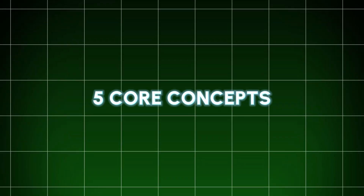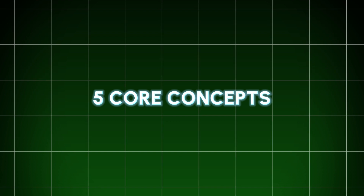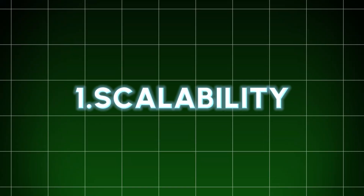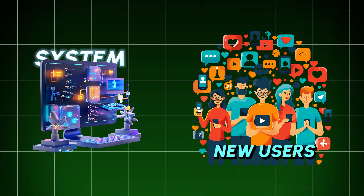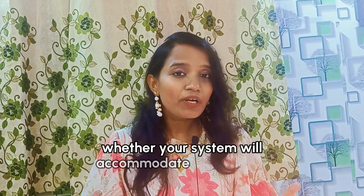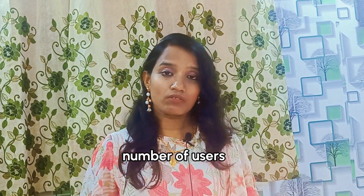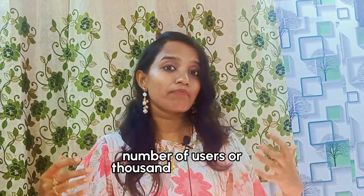Before we talk about the top 3 system designs, we need to know 5 core concepts. First is scalability. Scalability means: if there are 1,000 or even 1,000 million new users, can your system accommodate them? Your system design should be built to handle that scale.